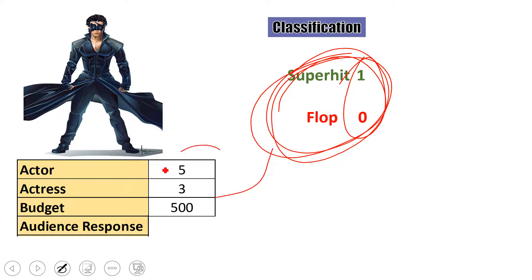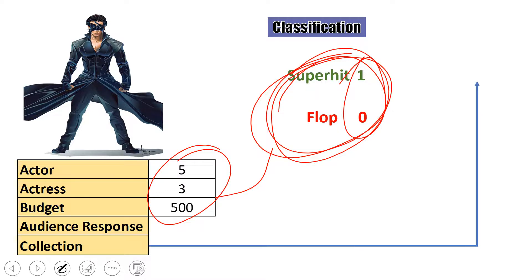But using the same data, or maybe different data, when you try to predict the collection - that means earning - that means you want to predict how much the movie will make.